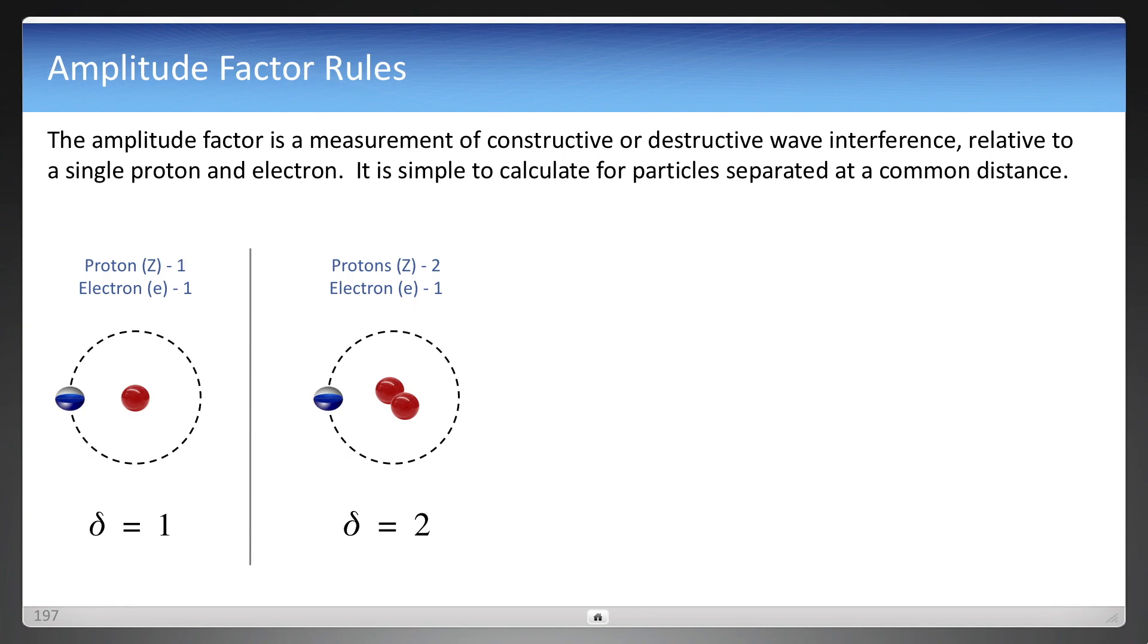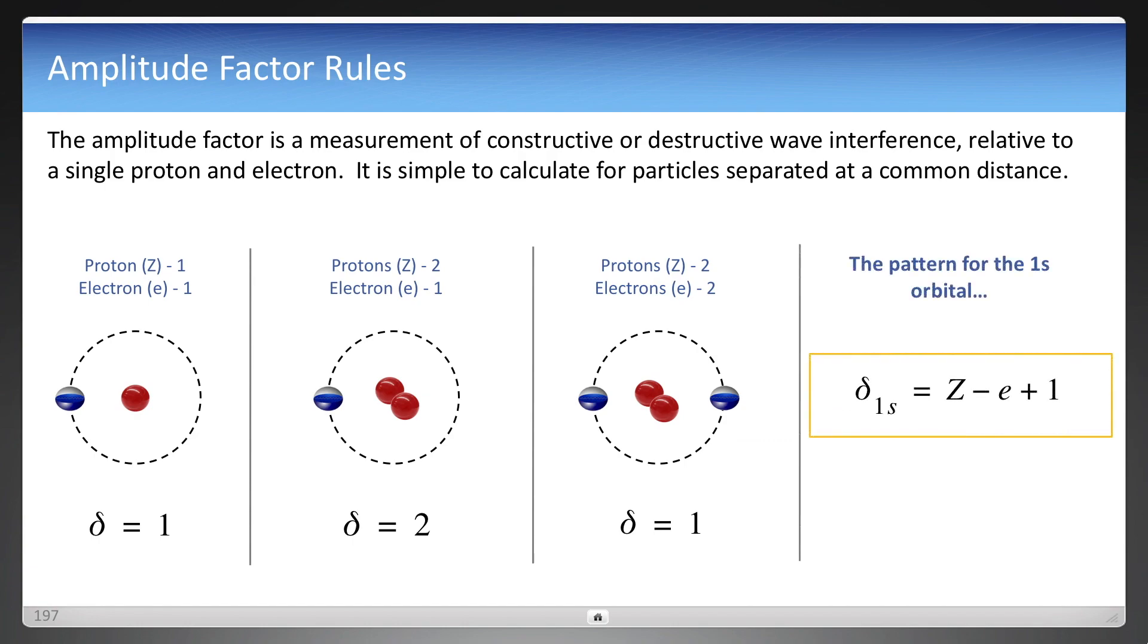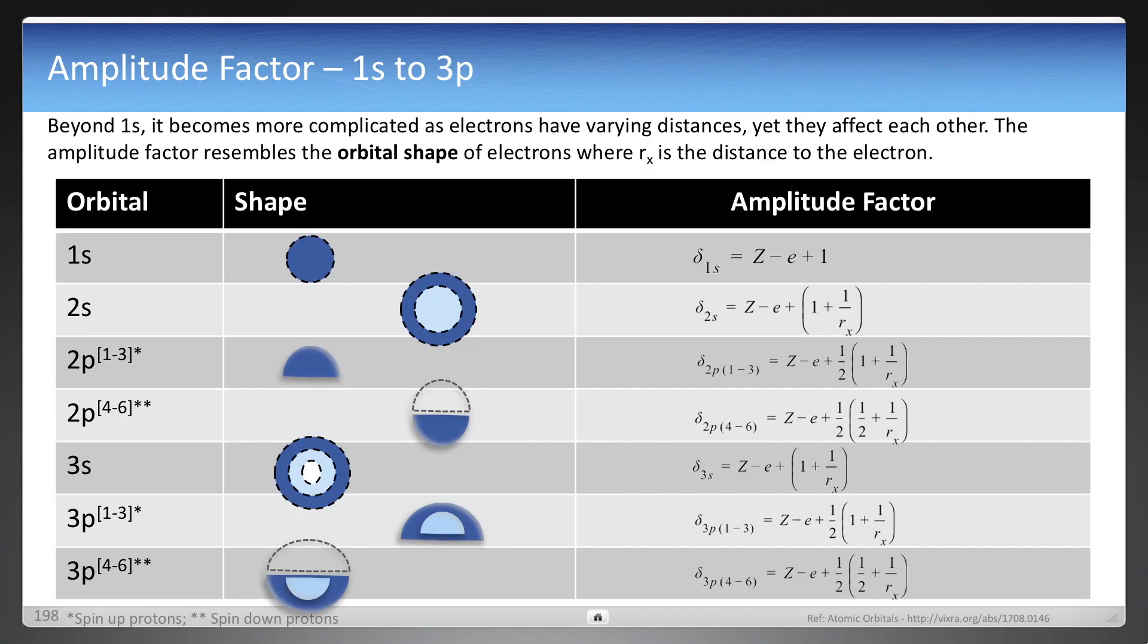But now, neutral or stable helium has two electrons. And you can see how that is back to one. It's stable. Now, the pattern is quite simple. It's the number of protons minus the number of electrons plus one for the 1s orbital. The reason why the 1s orbital is easier is because electrons are all going to be at the same distance.